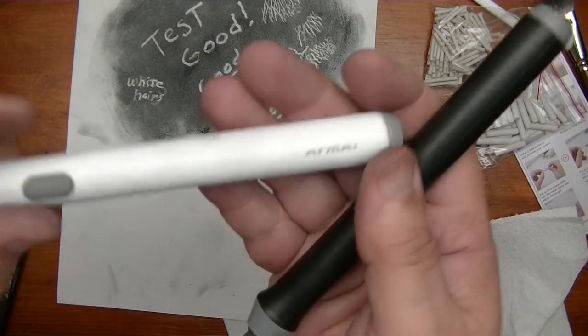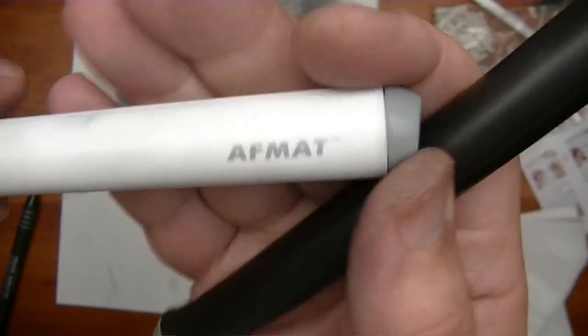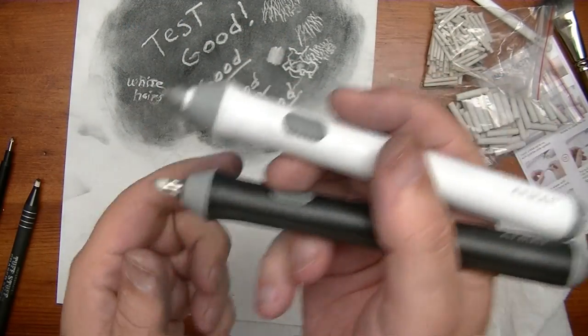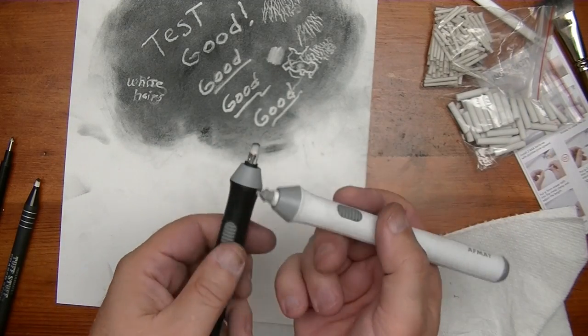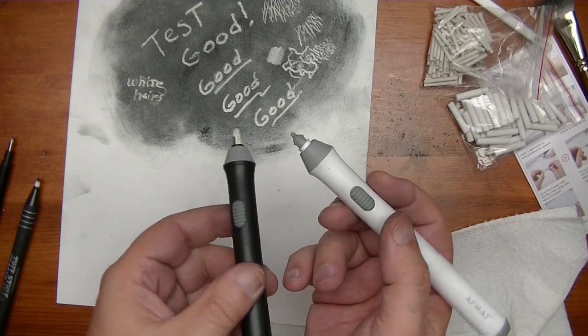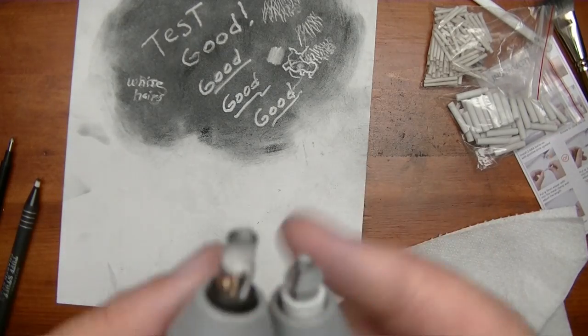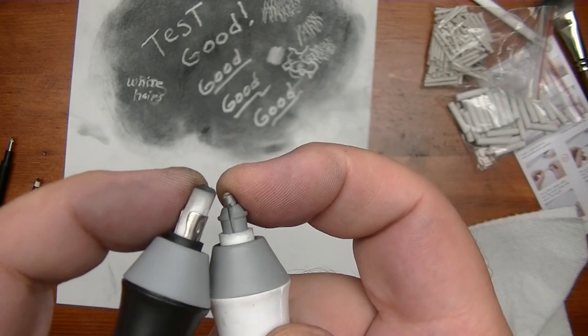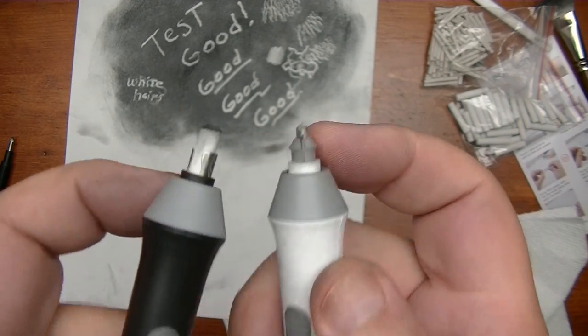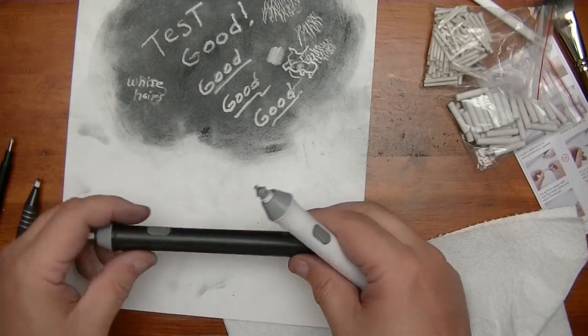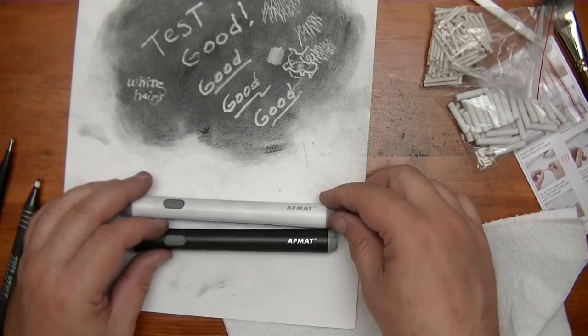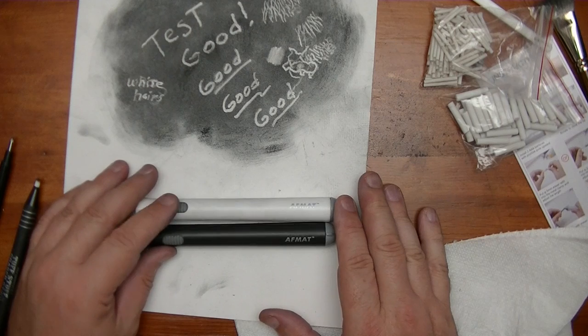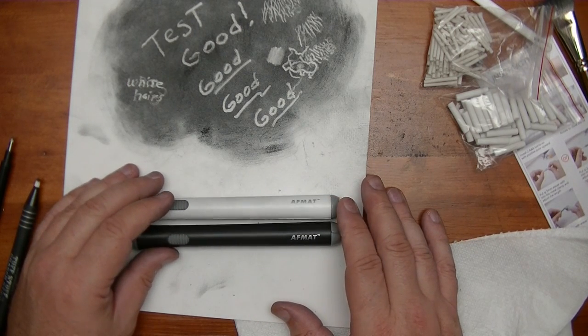Interesting. So there you go folks. You have the white and you have the black AFMAT pen shaped electric battery operated erasers. And both of them come with both sizes of erasers, so you get the adapters as well. So I think they're awesome. I'm happy to have them. I will definitely be using them the most when it comes to needing a battery operated electric eraser.